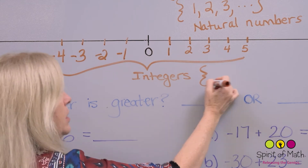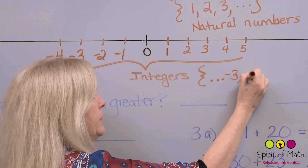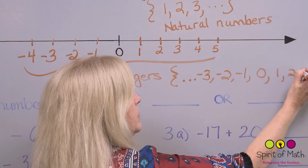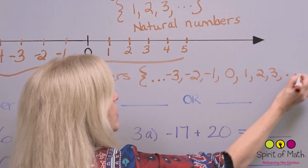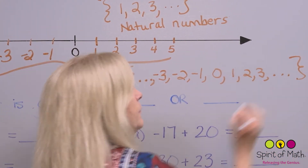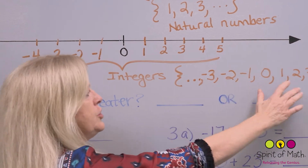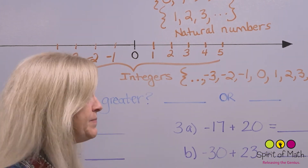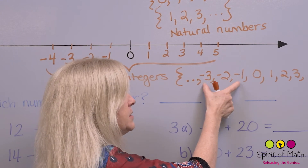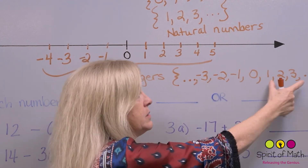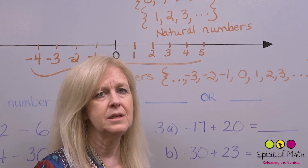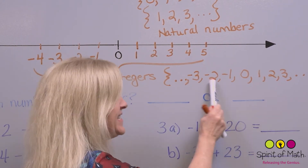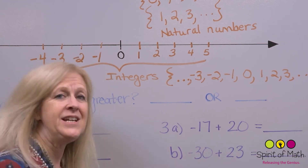All of these put together make the integer number set — the integers. You write that properly with ellipsis because it goes forever in both directions: dot dot dot, negative three, negative two, negative one, zero, one, two, three, and so on. So those are the integers: the natural numbers, their opposites, and zero. Integers do not include fractions or decimals — just the counting numbers.